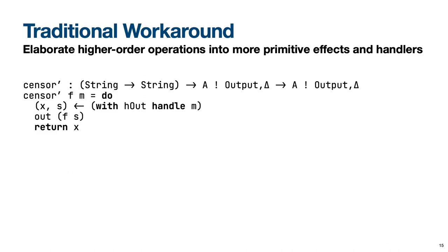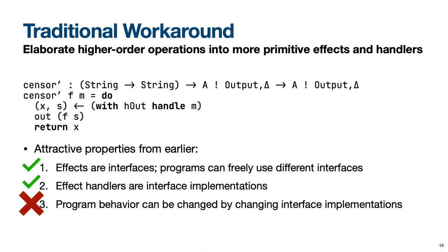There is a well-known and widely used workaround to the problem with handling higher-order effects: encoding higher-order operations such as censor in terms of more primitive effects and handlers. For example, the function sensor prime has a similar type signature and behavior as the censor operation. The implementation uses an inline invocation of the effect handler for output to get access to and apply our censoring function to the batch output of the parameter computation M. While this elaboration is simple, it precludes one of the three nice modularity properties — specifically, we cannot easily change the behavior of programs that use this sensor prime elaboration.